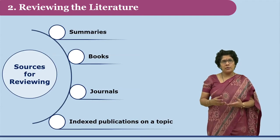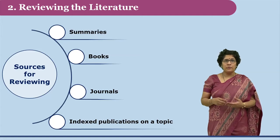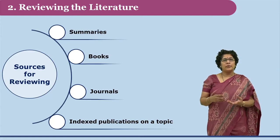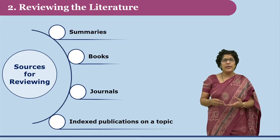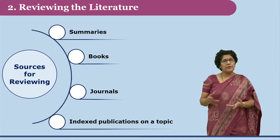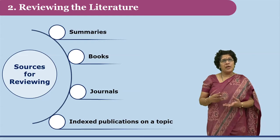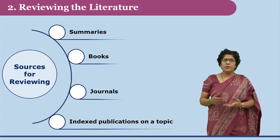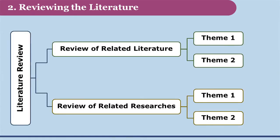While conducting a literature review, what sources should the researcher look into? The researcher is expected to look into books, journals, encyclopedias, technical reports, earlier researches, and databases — online or offline. Index publications on the topic may also be referred to. This literature review is divided into two parts: the first part deals with the review of theoretical aspects, called the review of related literature, while the other part deals with the review of earlier researches, called the review of related researches.